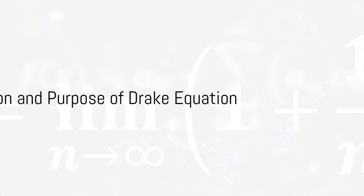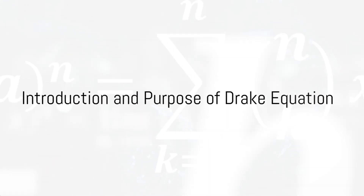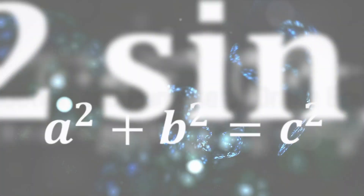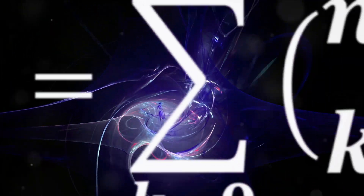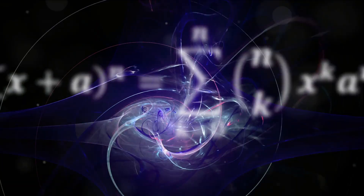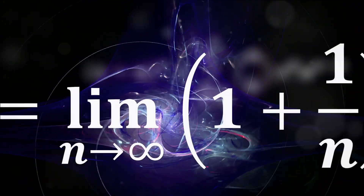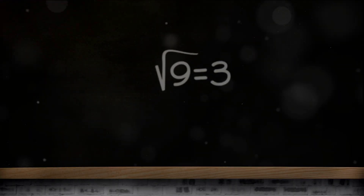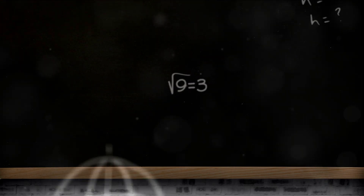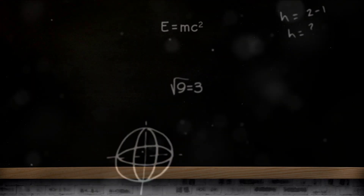Have you ever looked up at the night sky and wondered if we are alone in the universe? The question of extraterrestrial life has intrigued scientists and stargazers alike for centuries. Enter the Drake Equation, a scientific formula that attempts to estimate the number of civilizations in our galaxy.